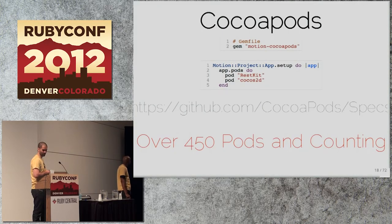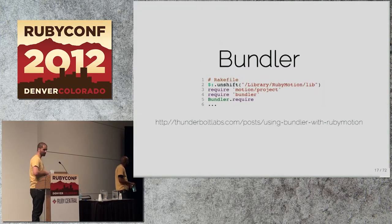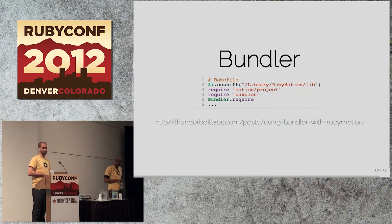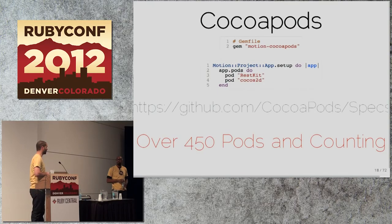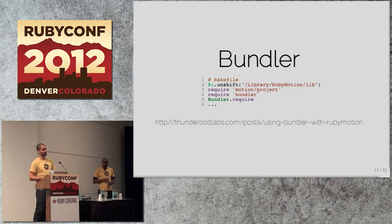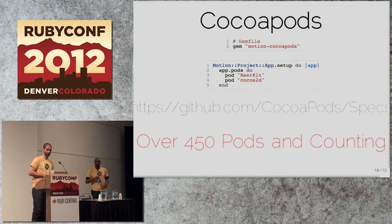Including Bundler in RubyMotion is really easy. You modify your Rakefile to do 'require bundler' and then 'Bundler.require,' and it loads all of the gems in your Gemfile just like a Rails application. Now you can use gems like BubbleWrap and things built for RubyMotion. You can also install the CocoaPods gem.